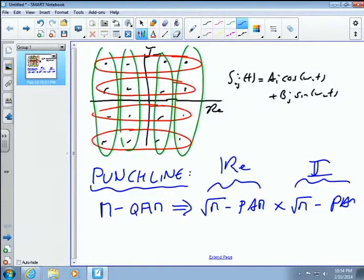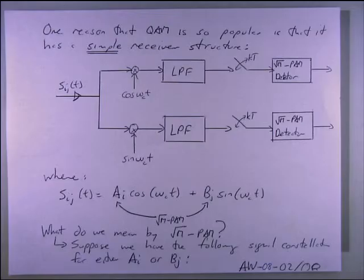With quadrature amplitude modulation, where the points are laid out in this grid-like pattern, now all you need to do is, I have in the real axis, which amplitude do I have? And in the imaginary axis, which amplitude do I have, and you can figure out exactly what binary pattern has been transmitted using two quantizers, one on I and one on Q.